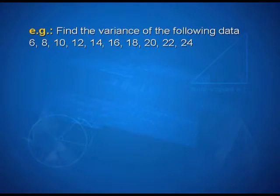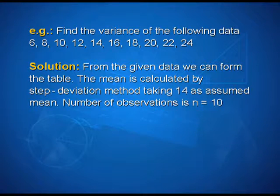Find the variance of the following ungrouped data: 6, 8, 10, 12, 14, 16, 18, 20, 22 and 24. From the given data, we can form the table. The mean is calculated by the step deviation method, taking 14 as the assumed mean, and here the number of observations is n equal to 10.